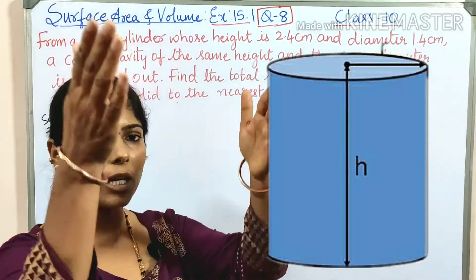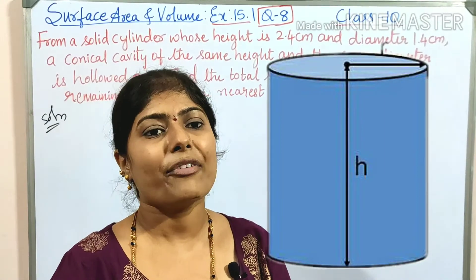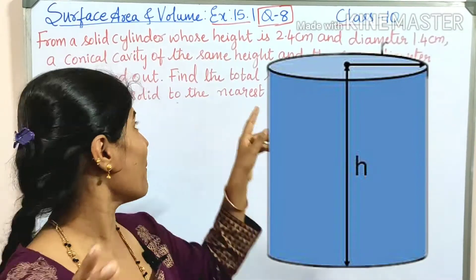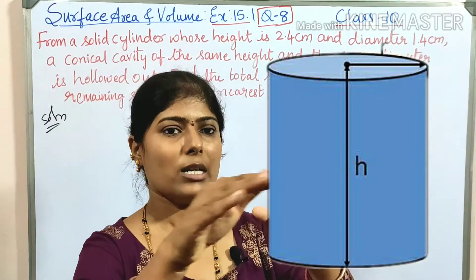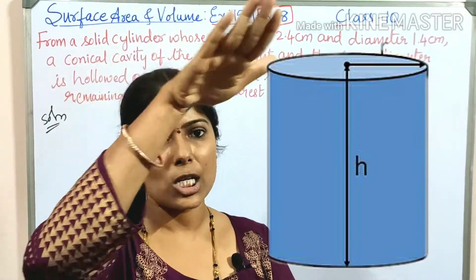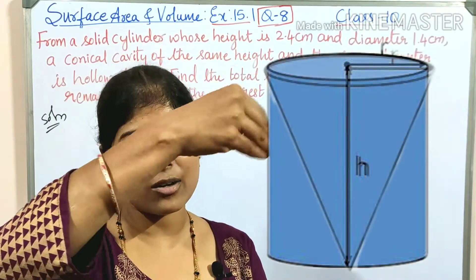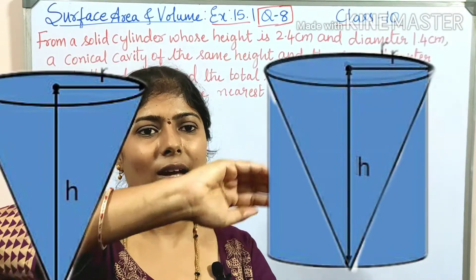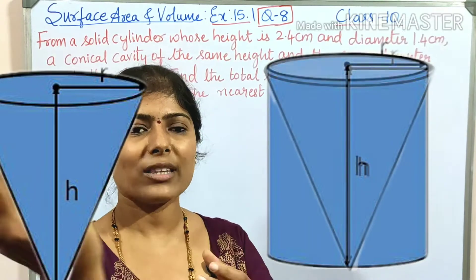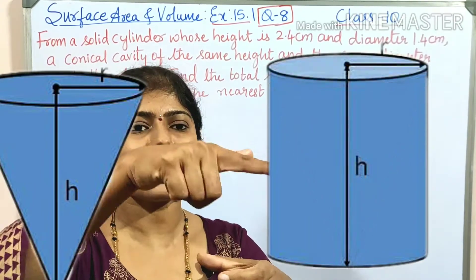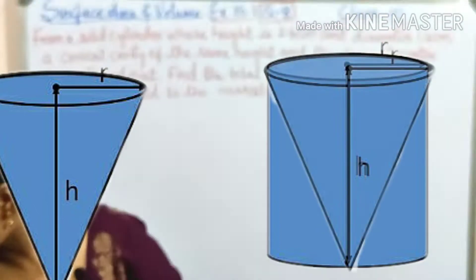The total surface area of a solid cylinder includes the curved surface area plus the top circle and the bottom circle. A conical cavity means the curved surface area of the cone. The cavity is hollowed out — it is removed — but the shape, the depression, remains in that solid.